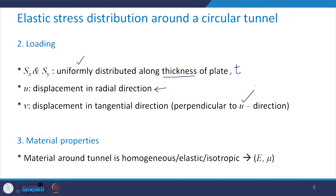The third aspect is related to material properties. It has been assumed that the material around the tunnel is homogeneous, elastic, and isotropic. So E and ν are going to be the material characteristics of the rock around the tunnel.